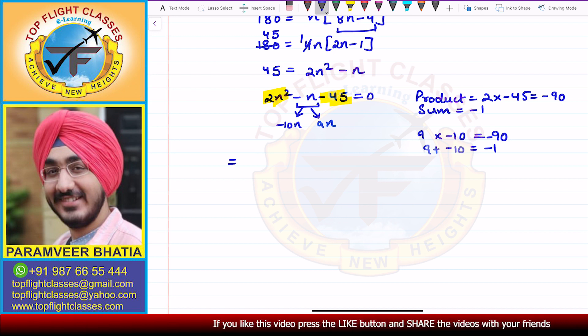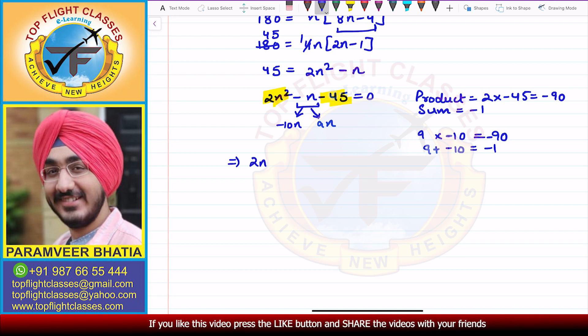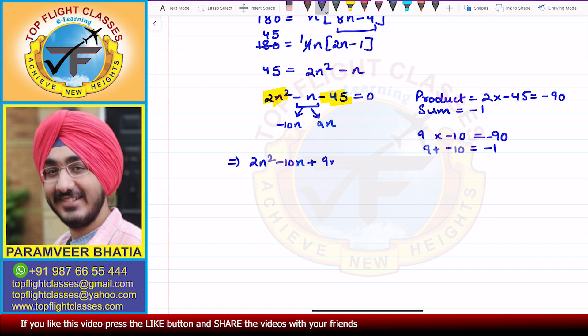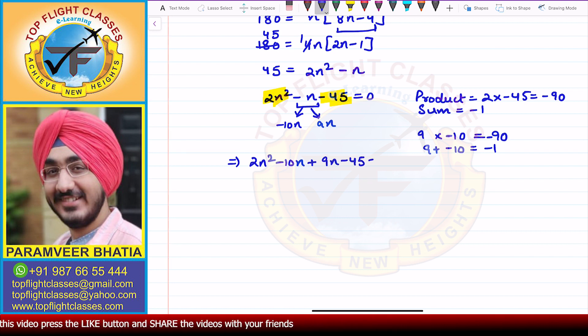After splitting the middle term, I get: 2N squared minus 10N plus 9N minus 45 = 0.